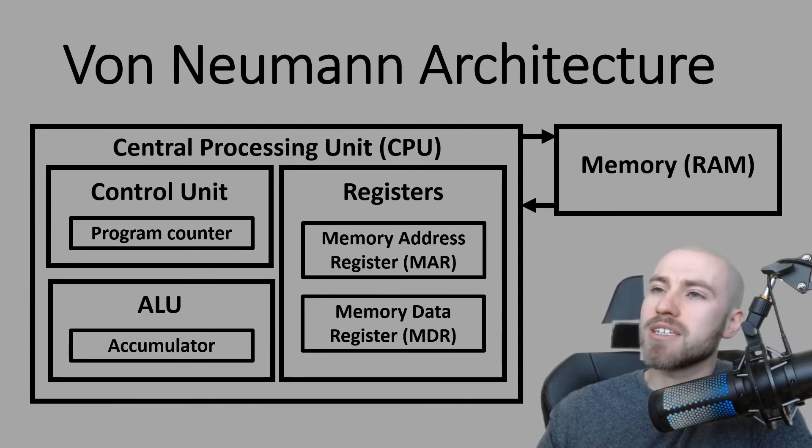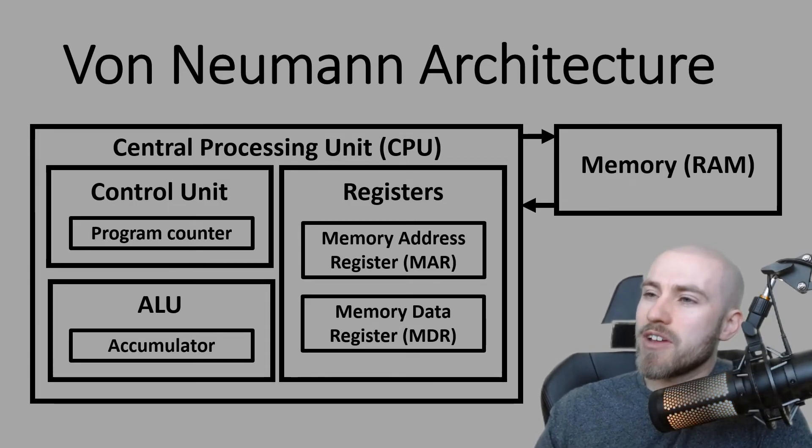The process is just carried out again, so the program counter is increased to 2 and it will then start that cycle again where it will then fetch whatever's in memory address register 2, and then it will bring it back to the MDR and the control unit will take care of it. It will decode that instruction and it will execute whatever needs to happen next.